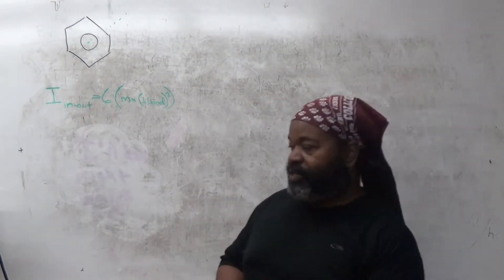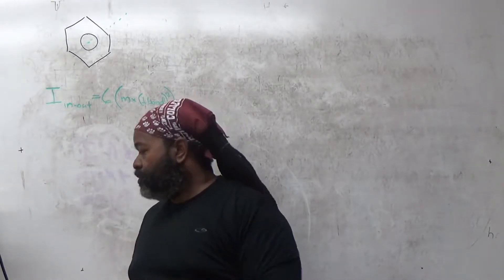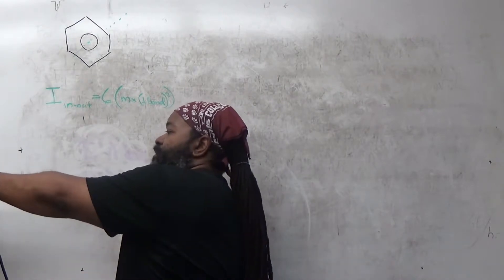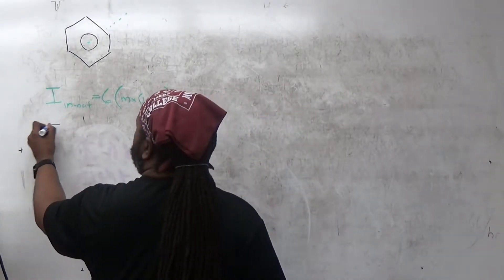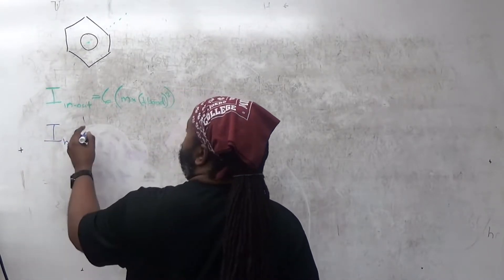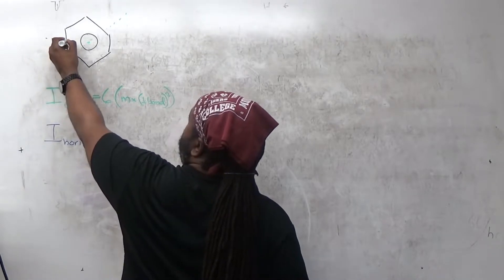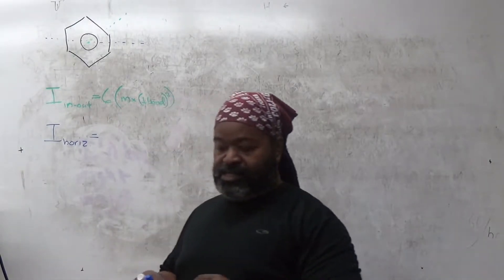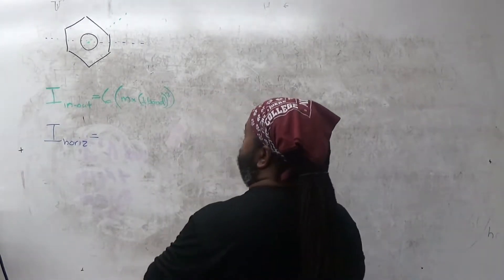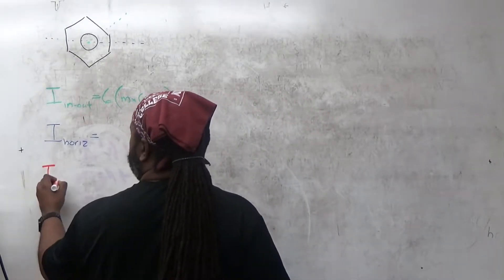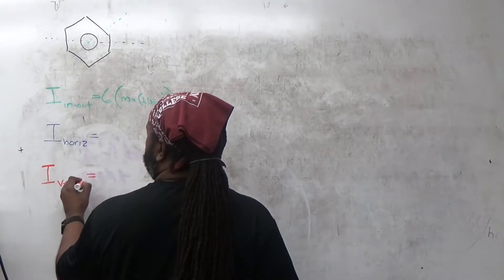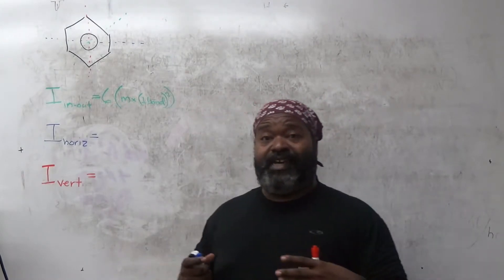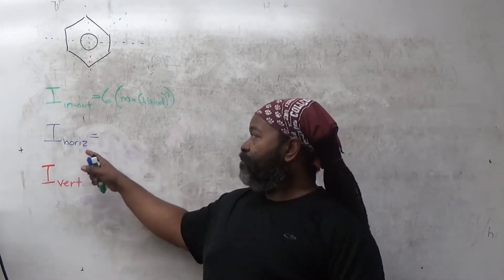So the claim is that we need two other axes to worry about. I'm going to take the blue marker and use that for the horizontal. That means it cuts it exactly in half. Then I'll take the red and use that for our vertical axis, which also cuts it in half.